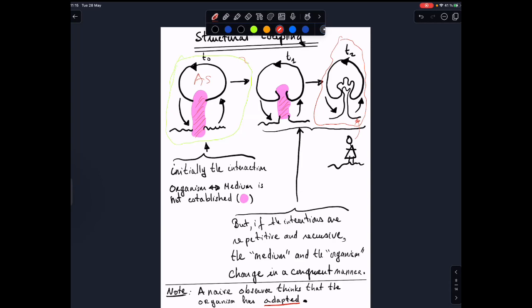And then this is why it's so important, the relation between the living system and its medium. And then I will repeat that initially, the interaction between the organism and the medium is not established, but little by little, if the interactions are repetitive and recursive, the medium and the organism change in a congruent manner. And I must insist also that a naive observer will think that the organism has adapted to the object, while the real phenomenon is totally different because the organism has produced, has organized a medium that didn't have a structure, has organized the medium into an object.